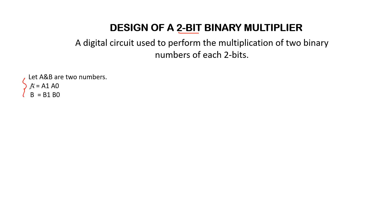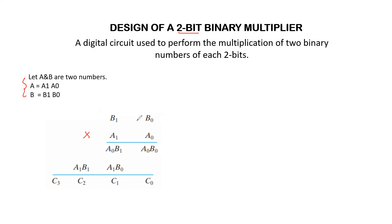Now let us take two numbers A and B. A has 2 bits: A0, A1 and B has 2 bits: B0, B1. We should multiply these two numbers A and B. B0 B1 is multiplied with A0 A1. First we multiply with A0, then with A1 and add. A0 B0 is the first product term, A0 B1 is the next product term.